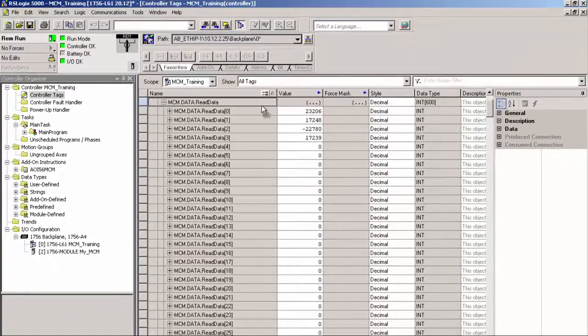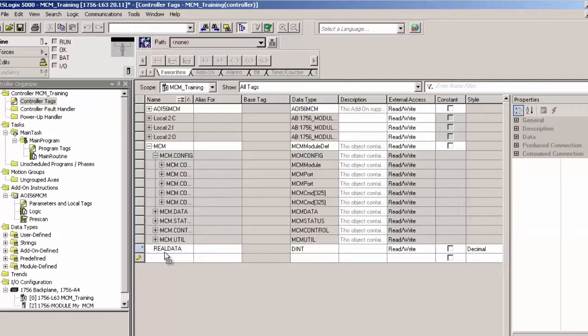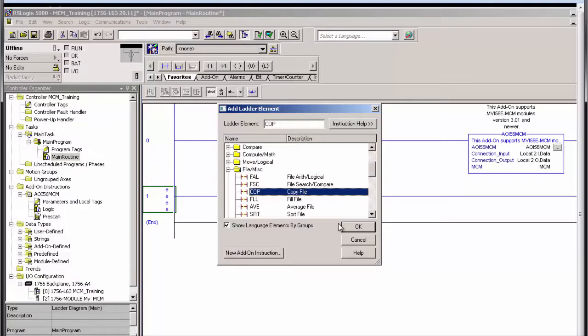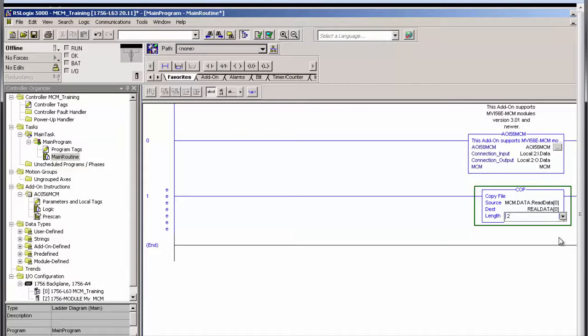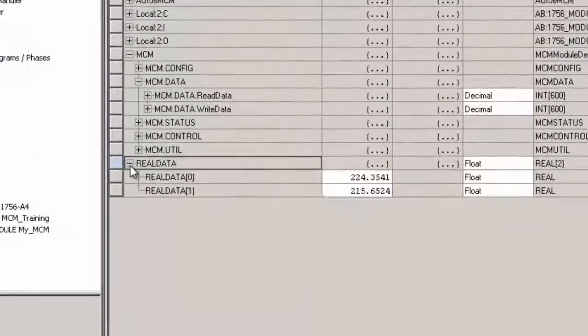To see the data as the floating point values they started out as, they must be copied into two tags with a real data type. This is accomplished in RSLogix 5000 by adding a copy instruction to the main routine ladder. This will take the four 16-bit words we read from the slave device and combine them back into two 32-bit floating point numbers.